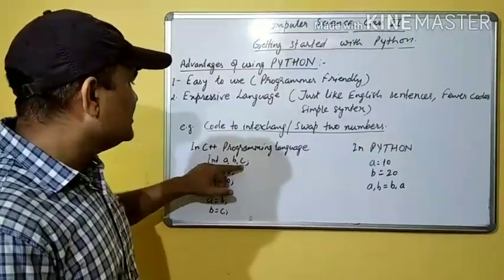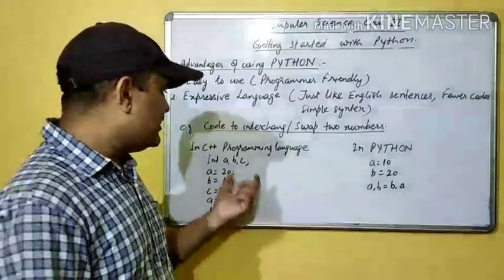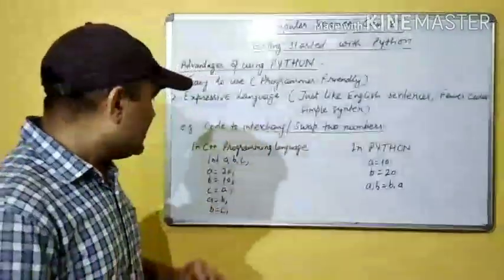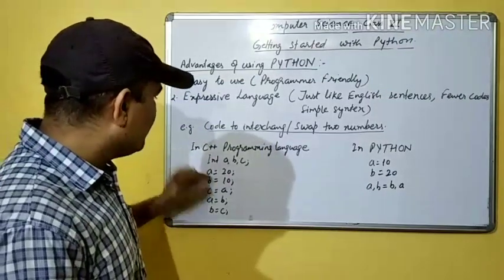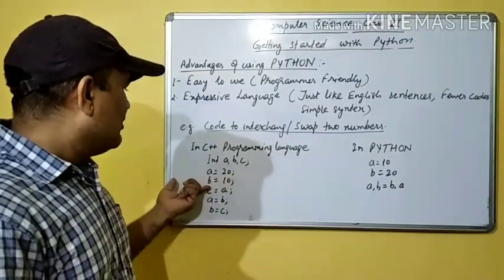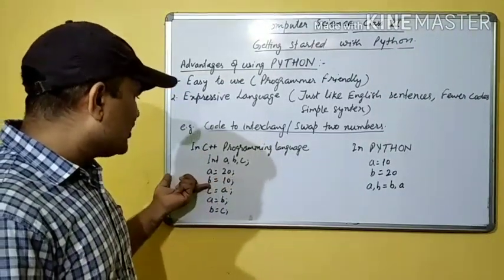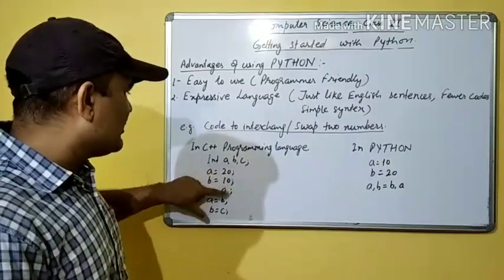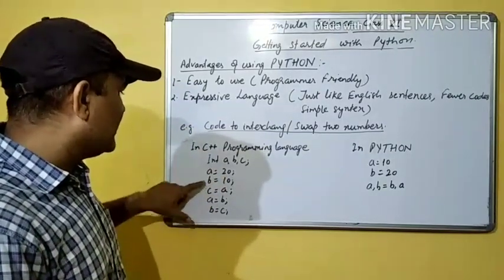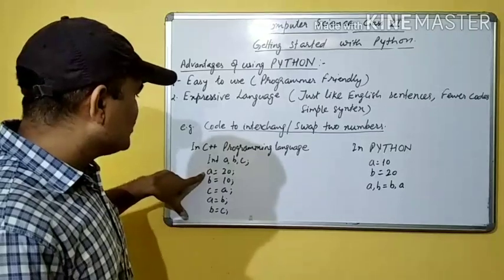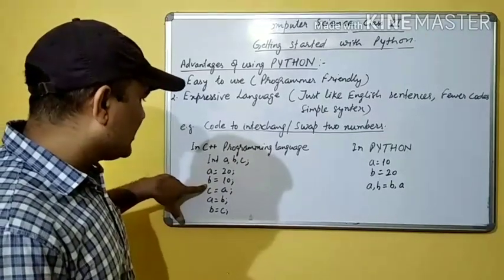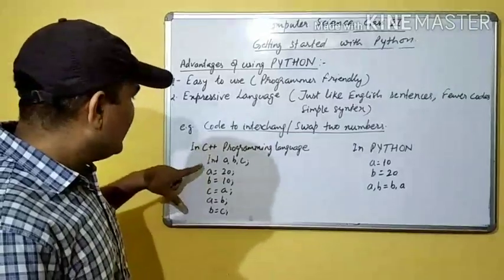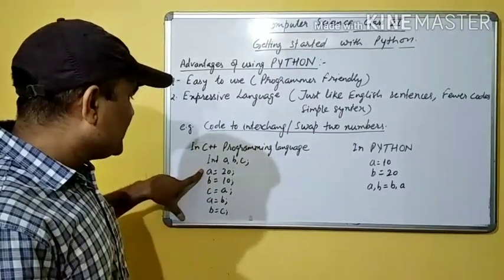In C++, we write: int A, B, C. We initialize three memory locations — in the first memory location we keep 20, in the second memory location we keep 10. Then we have to swap these two numbers by moving the A value to the B memory location.